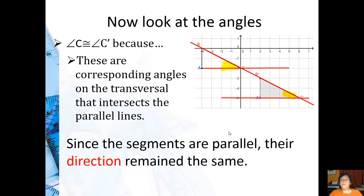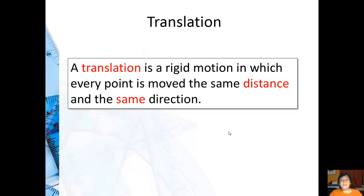Now, since the segments are parallel, their direction remain the same. So, a translation is a rigid motion in which every point is moved the same distance, which you saw in the previous page notes, and also in the same direction.